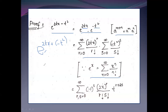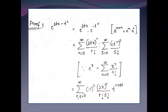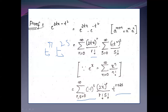Now (−t²)^s equals (−1)^s times t^(2s). Combining the two series into a double summation over r and s from 0 to infinity, we get (−1)^s times (2x)^r times t^r times t^(2s), divided by r factorial times s factorial. Using a^m times a^n equals a^(m+n), the power of t becomes t^(r+2s).